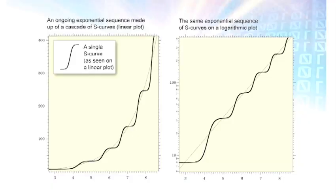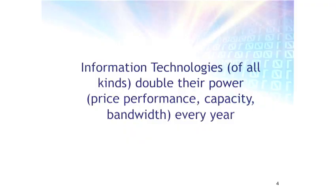Information technology progresses through a series of S-curves where each one is a different paradigm. When Moore's Law comes to an end — which will happen around 2020 — we'll go to the next paradigm. And Moore's Law was not the first paradigm to bring exponential growth to computing. The exponential growth of computing started decades before Gordon Moore was even born.